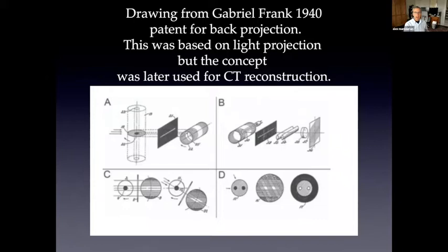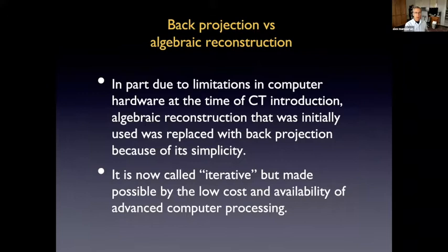The techniques for reconstruction of the data actually go back to the 1940s, decades before the first CT scanners. And this was based on this principle of back projection, which was a visual technique or a light technique to acquire the information in a projection. But it was used in the early CT scanners, not because it was preferential to an actual mathematical reconstruction, but because of the available computer power at that time.